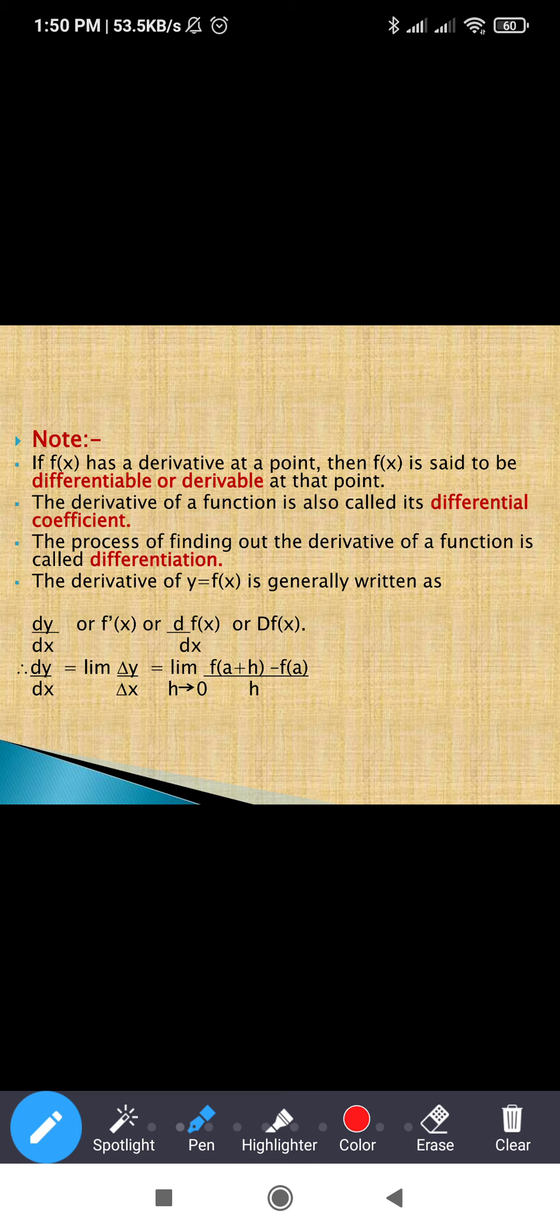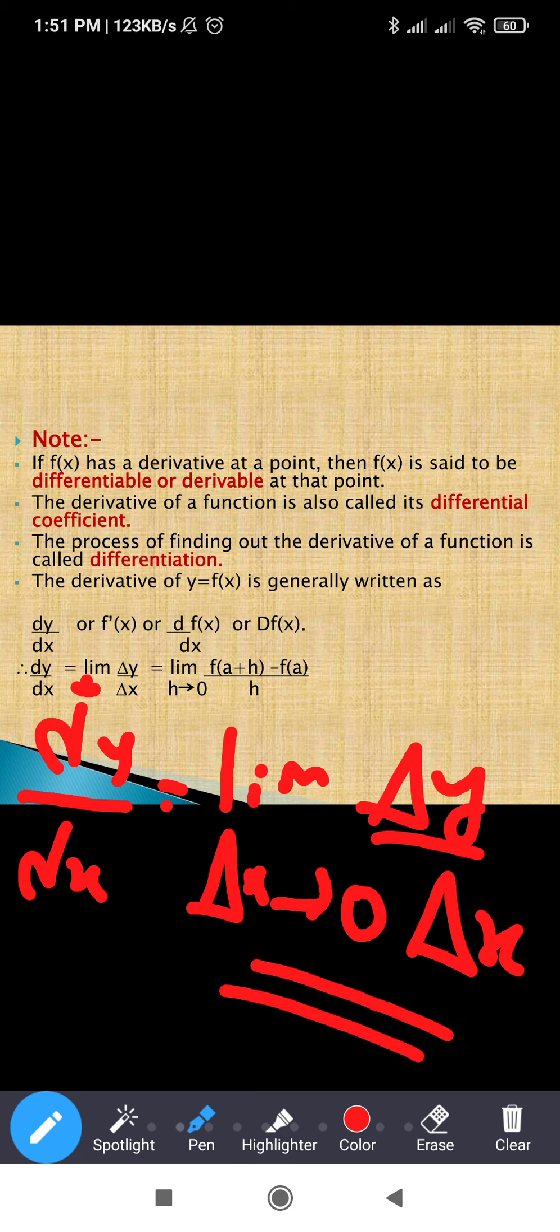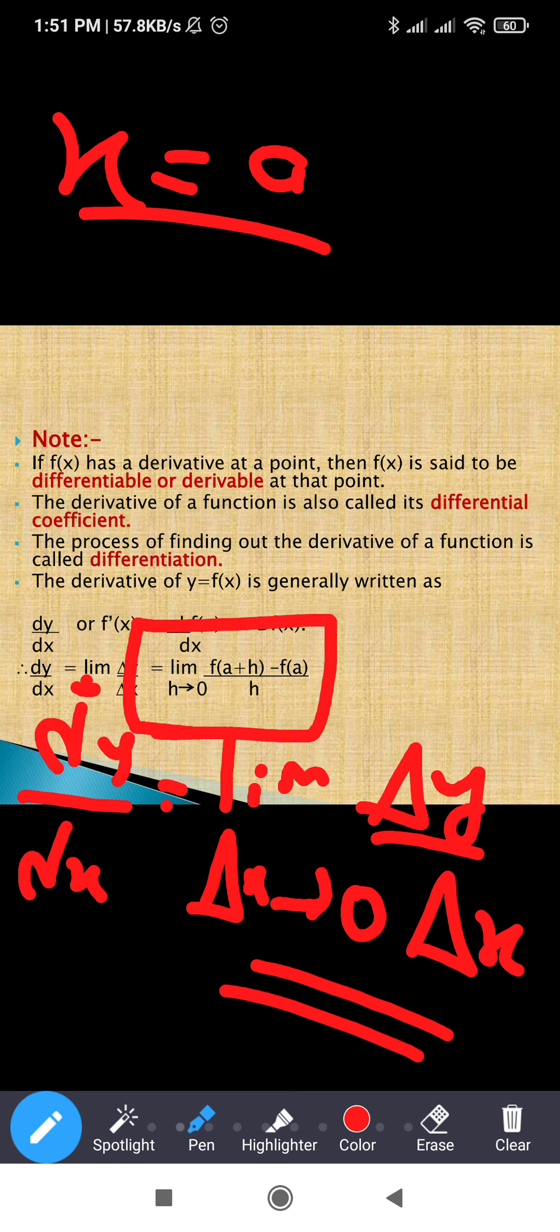dy upon dx is equal to limit - actually there's a small mistake here in the typing, so let me correct this. dy upon dx is equal to limit of delta x tends to 0, delta y upon delta x. At a point x equal to a, if we need to check, what is it? Limit of h tends to 0, f(a + h) minus f(a) upon h.